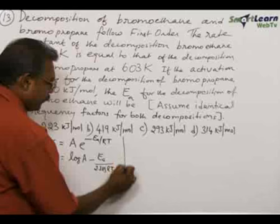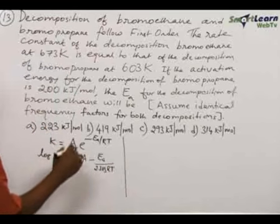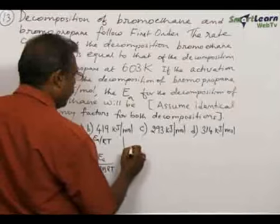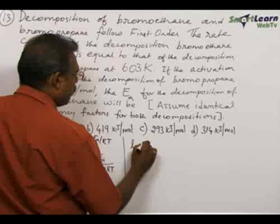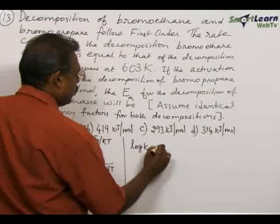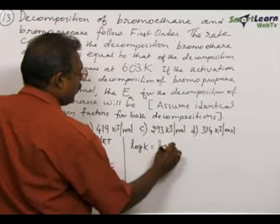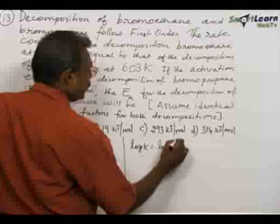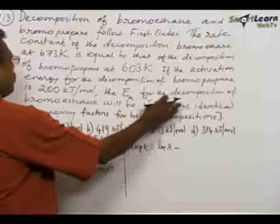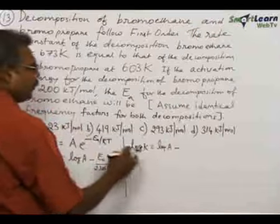For example, for bromoethane, how to write: log k equals log A minus, and here the decomposition of bromoethane only we have to calculate.